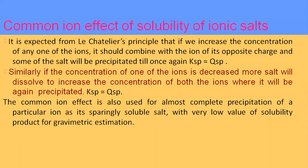The common ion effect on solubility of ionic salts follows Le Chatelier's principle: if we increase the concentration of any one ion, it combines with the oppositely charged ion and some salt precipitates until Ksp equals Qsp again. For example, increasing the positive ion concentration causes it to attract and combine with negative ions, disrupting equilibrium. Adding ions of opposite charge causes precipitation.